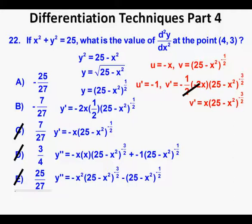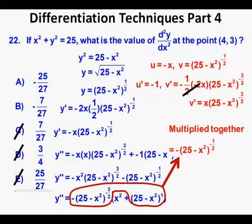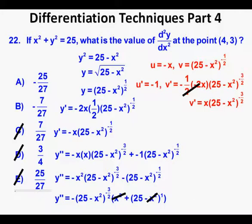This is the same type of factoring technique used in Problem 20. We factor out −(25 − x²)^(−3/2) and get −(25 − x²)^(−3/2) · [x² + (25 − x²)^1]. Note: multiplying −(25 − x²)^(−3/2) by (25 − x²)^1 gives −(25 − x²)^(−1/2), which matches the second term. Simplifying inside the brackets, x² − x² cancels, leaving 25. So y'' = −25 / (25 − x²)^(3/2), or equivalently −25 / [√(25 − x²)]³.